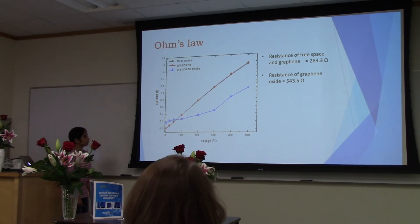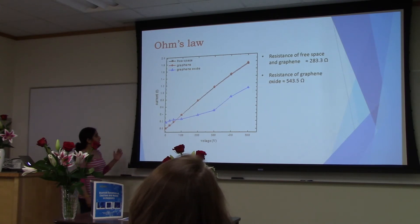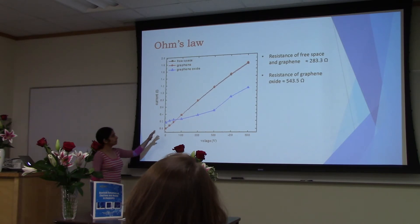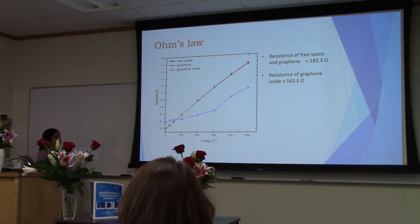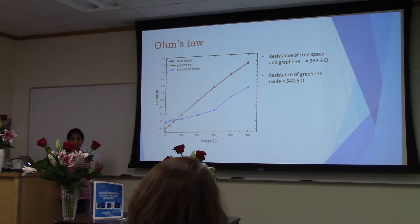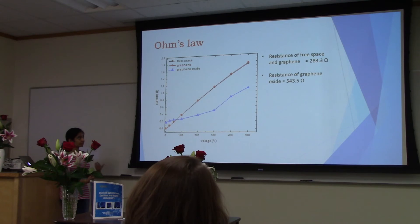As one of our objectives, we examined Ohm's law by plotting current dependence at different voltages for free space, graphene, and graphene oxide. The gradient of the plot is the reciprocal of resistance. The resistance of free space and graphene was 283, whereas the resistance of graphene oxide was 543. Since higher resistance corresponds to lower conductivity, this confirms our hypothesis that graphene has higher conductivity than graphene oxide.